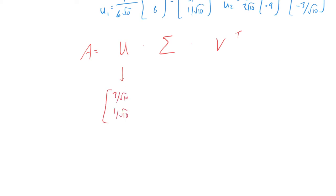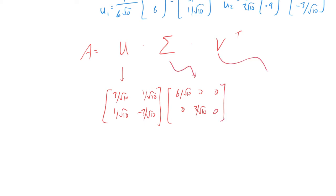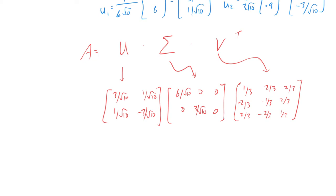Step four: write down the factorization. A equals U Σ V^T, where U is the matrix with columns (3/√10, 1/√10) and (1/√10, -3/√10); Σ is (6√10, 0, 0; 0, 3√10, 0); and V^T is the transpose of V: rows (1/3, 2/3, 2/3), (-2/3, -1/3, 2/3), (2/3, -2/3, 1/3). That is the singular value decomposition — we've decomposed A into U, Σ (the matrix of singular values), and V^T.